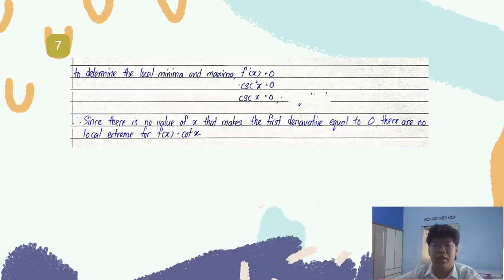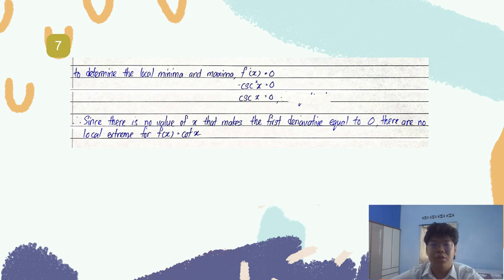To determine the local minimum and maximum, we set the first derivative equal to 0: negative cosecant squared x equals 0. Since there is no value of x that makes the first derivative equal to 0, there are no local extrema for the function cot x.